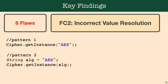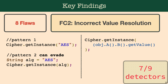The first is flaw class two. As you can see, it uses the two patterns I described previously, with the only difference being that we introduce a variable — and that was able to evade one cryptodetector. In addition, we also applied method chaining and saw that it was able to evade some of the cryptodetectors. In total, the eight flaws in this class were able to evade seven out of the nine cryptodetectors that we tested.